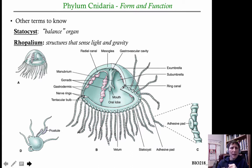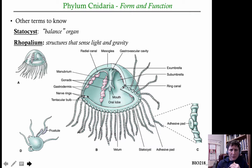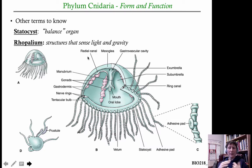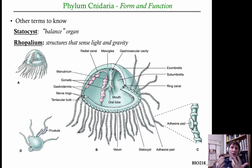Even though cnidarians have a very simplified nervous system, they do need to interact with their environment. They have structures called statocysts, which allow them to sense gravity — to know basically whether they're upside down or right side up. These are indicated as little black dots around the rim of the bell. Some cnidarians also have structures called rhopalium (singular) or rhopalia (plural), which allow them to sense light as well as gravity — important for knowing when the sun is up or down.